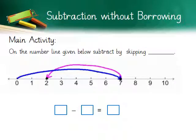Now students, you need to do the given sum yourself. First, find the bigger number — the blue line goes from 0 to 7, so our first number is 7. Next, find the number of skips using the purple line — yes, 5 skips. So our sum is 7 minus 5. By skipping 5 numbers, we drop at 2, so our answer is 2. Good job!